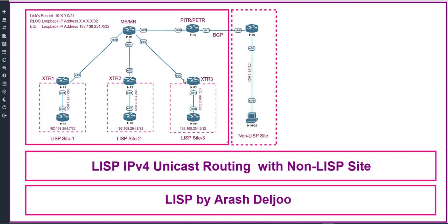Another challenge is that non-LISP site prefixes are not registered in the LISP mapping system. Here we have the mapping system — for example R4 — and internet prefixes are not registered on R4. So if R7 needs to send traffic to the non-LISP site, the mapping server has no information about it. The challenge is to establish communication between two routing domains — LISP and non-LISP — that have two separate databases of connectivity information built using different control plane protocols.